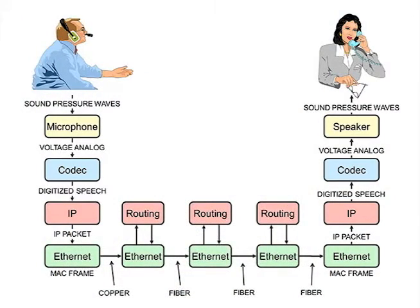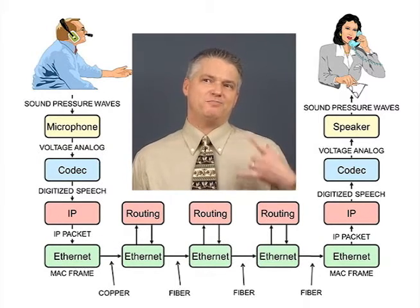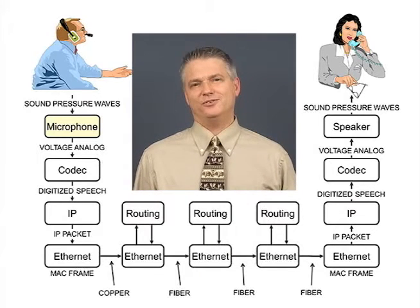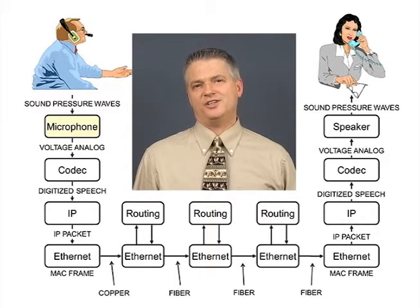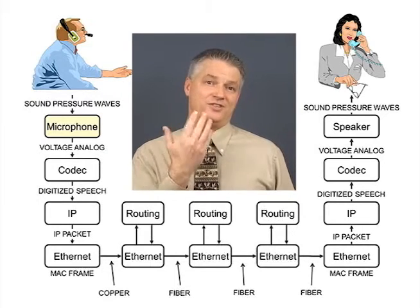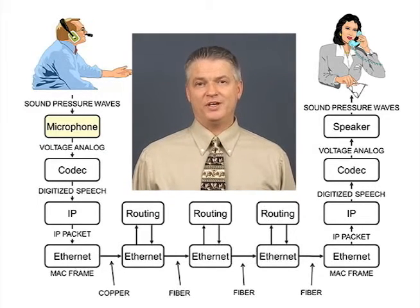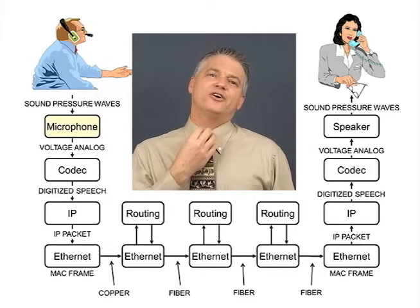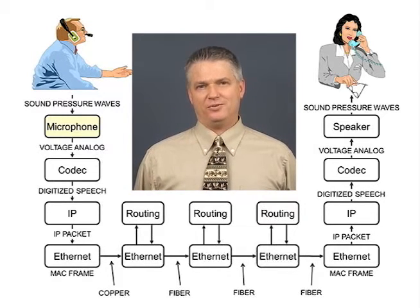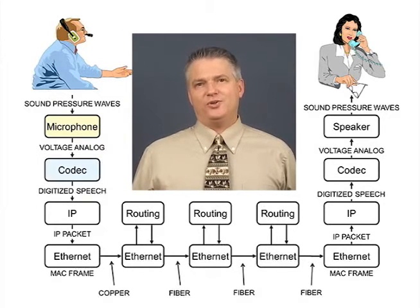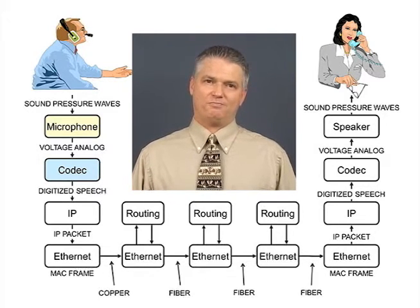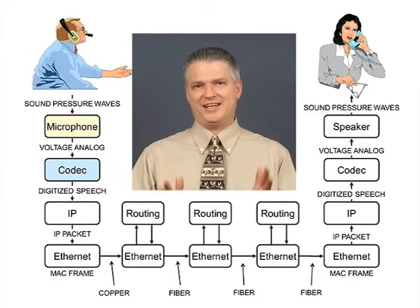One scenario is two people speaking directly over an IP network. Talking into a telephone handset, the microphone creates a voltage analog of the sound pressure waves coming out of your throat — two wires with a voltage that is an analog of the strength of those sound pressure waves. That gets fed into a codec, which digitizes the speech and then codes it, sometimes called compressing the speech, into a standard format.